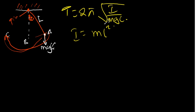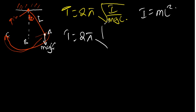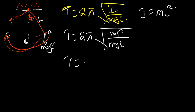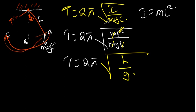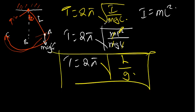Now, we want to come up with the proper formula to find the period. Since the moment of inertia is given by ML squared, we can replace I with ML squared. So the period is going to be equal to 2 pi times the square root of ML squared divided by MGL. We can cancel M and cancel one L, so we are going to have L over G. This gives us the formula: period equals 2 pi times the square root of L over G.